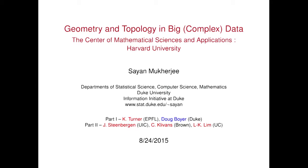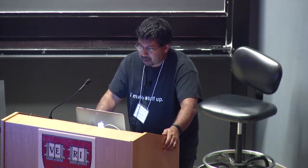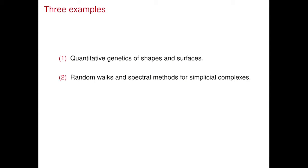I'm going to look at two projects. The first is joint work with Kate Turner, now at EPFL, and my colleague Doug Boyer at Duke. The second project is with former grad student John Steenbergen, Carly Clivens, and Leikhan Lim. The first project is really about modeling shapes and surfaces — the goal is to do something called quantitative genetics on shapes and surfaces. The second is about random walks and spectral methods on simplicial complexes.